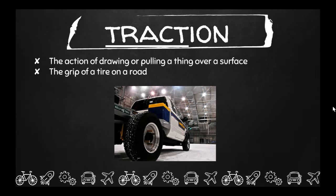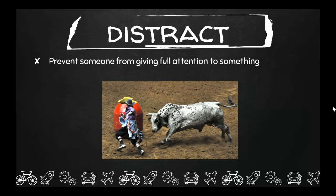Your next word is traction. This is the action of drawing or pulling something over a surface, or it is the grip of a tire on a road. Sometimes you might hear adults say 'I need new tires so that I have good traction during the winter' — the grip of the tire on the road so the vehicle can pull you across a surface.